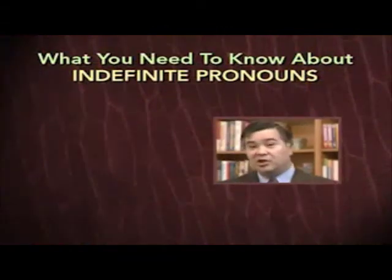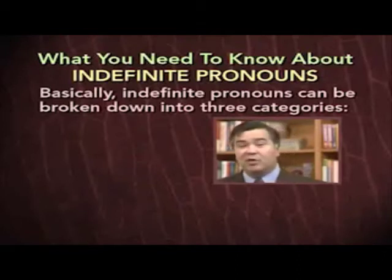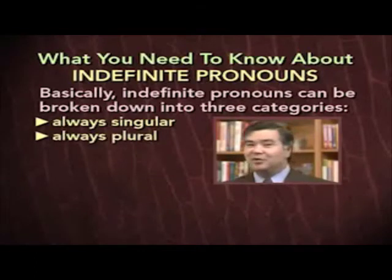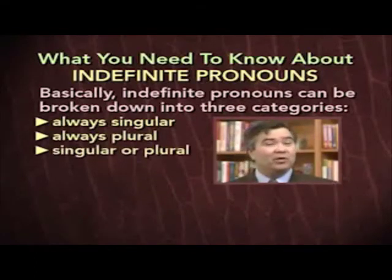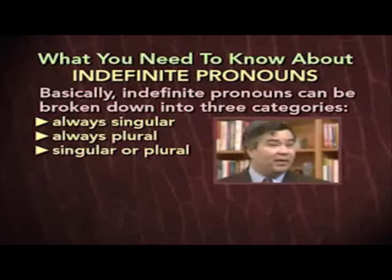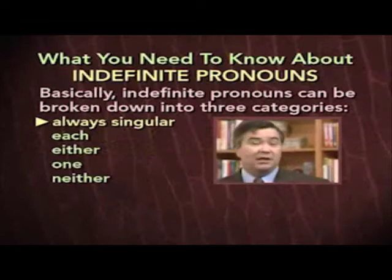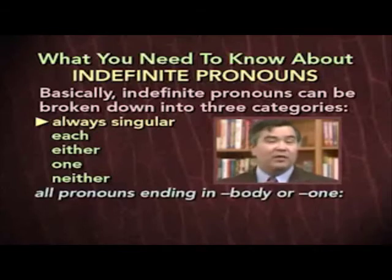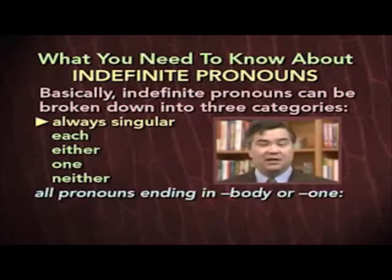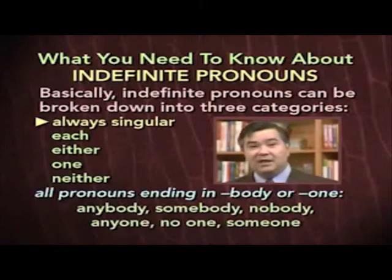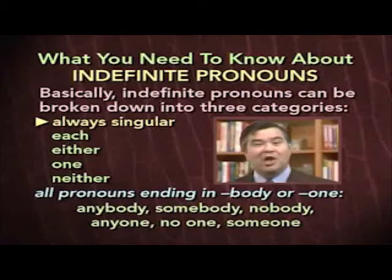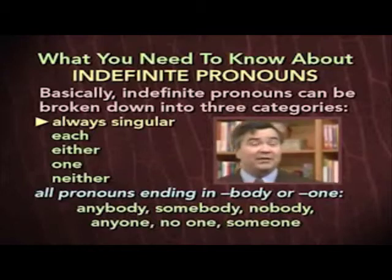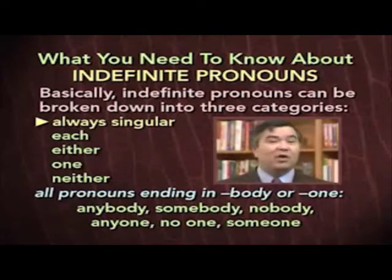In order to use indefinite pronouns correctly and match them up with the proper singular or plural verb, you need to know a few basic rules. Basically, indefinite pronouns can be broken down into three categories: some are always singular, some are always plural, and some may be either singular or plural depending on the context. The following indefinite pronouns are always singular: each, either, one, neither, and all pronouns ending in -body or -one, such as anybody, somebody, nobody, anyone, no one, and someone. Whenever you use one of these as the subject of a verb, always consider the pronoun singular and use a singular verb.